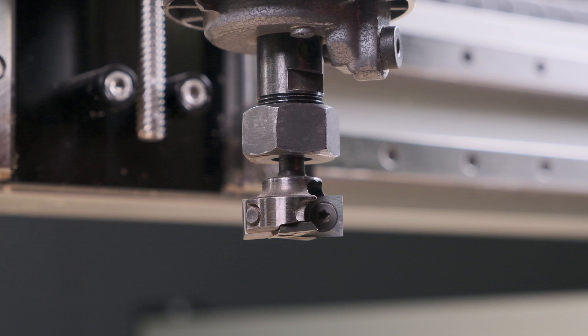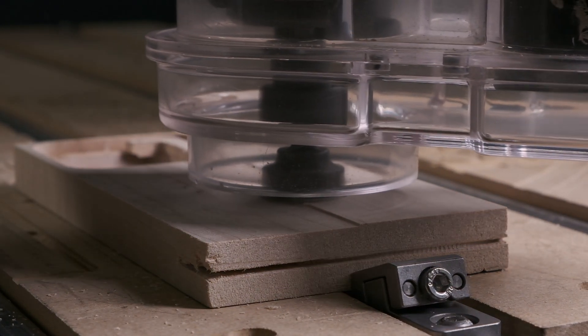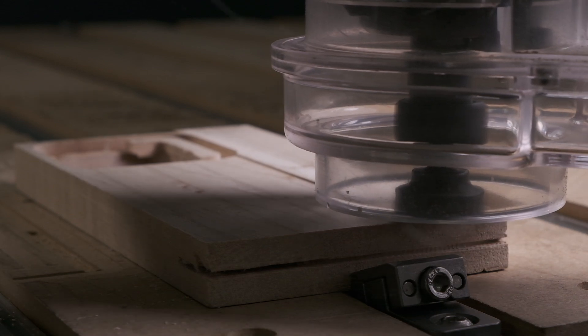The inserts on the sides do most of the work of ripping through wood, while the inserts on the bottom shave material cleanly off the top face of your stock, leaving a nice surface finish.